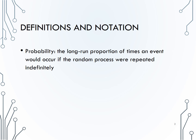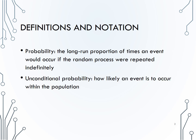There are two types of probability we should discuss. Unconditional probability is how likely an event is to occur within the population, or if the random process were repeated over and over with no restrictions. We denote an unconditional probability using this notation. The P stands for probability, and A is the event of interest, although we could use any other capital letter. We would read this as P of A. This is not a multiplication problem — this is function notation, the probability of an event, in this case event A.